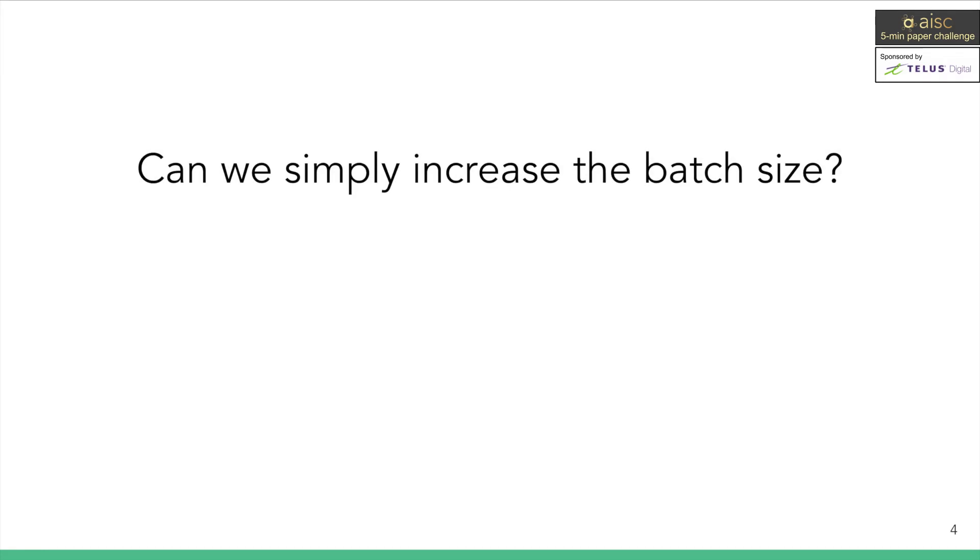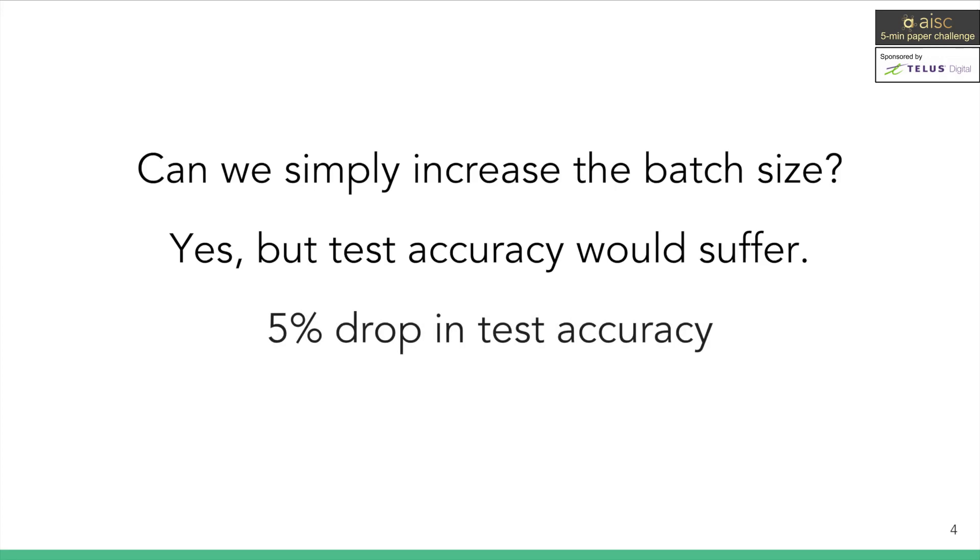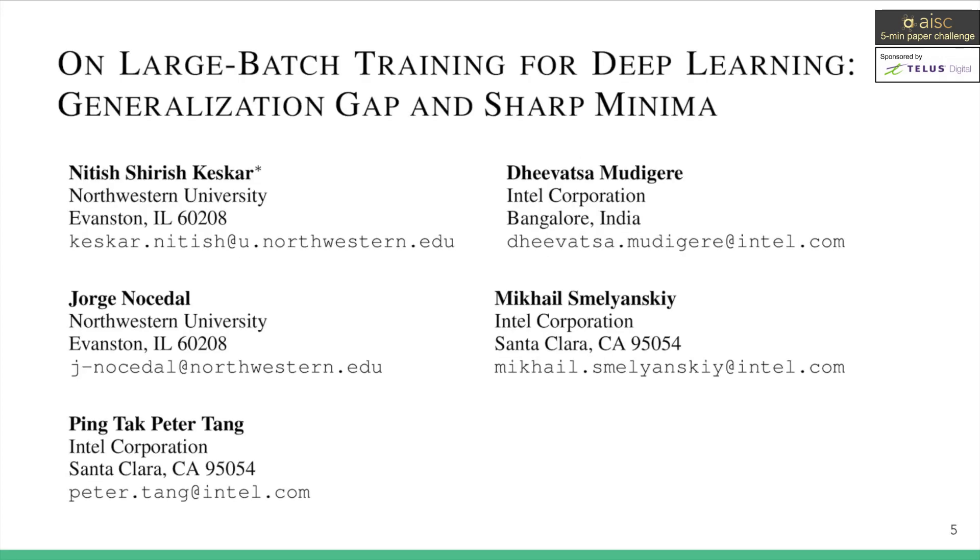So you might be asking, why can't we just increase the batch size to enable large parallelization? The answer is yeah, but at a sacrifice of test accuracy. In practice, people have found that large batch sizes frequently result in degradation in the quality of the model, sometimes as large as a 5% drop. Analyzing and explaining the discrepancies between small and large batch training is the main contribution of this paper. The author calls such discrepancy the generalization gap. The paper was authored by Nitish Shirish Keshar and colleagues from Northwestern University and Intel.